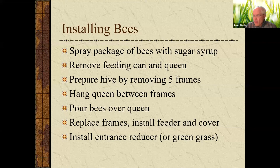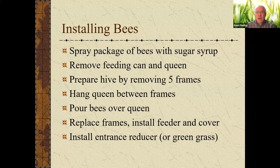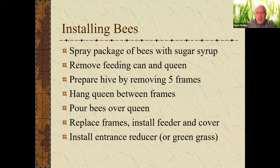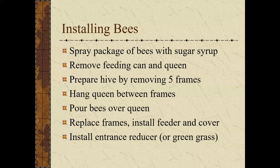When installing the bees, once you get them you're going to get a package of bees. You might want to warn the post office that they're coming — every post office in the United States has had to deal with bees. Give them your phone number so they can call you, and if you're a beekeeper they'll open the back gate for you and you can come and get your bees. As for how much land you need to have a hive — zero. They're going to go out five miles from where you're at and forage from everybody around you.